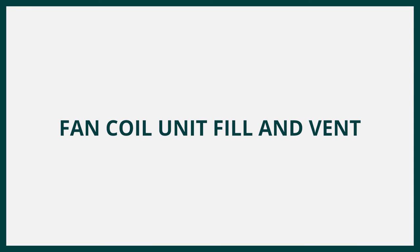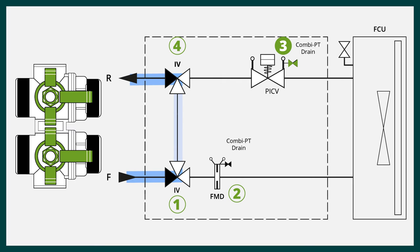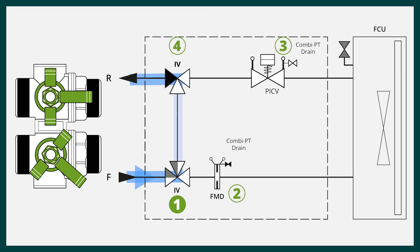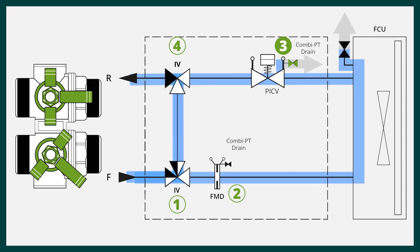To vent the fan coil unit, firstly open Hose Drain 3 and the air vent situated on the fan coil unit. To fill, slightly open Flushing Bypass Valve 1 slowly to fill the unit. Close Drain 3 and fan coil unit vent when the circuit is filled.